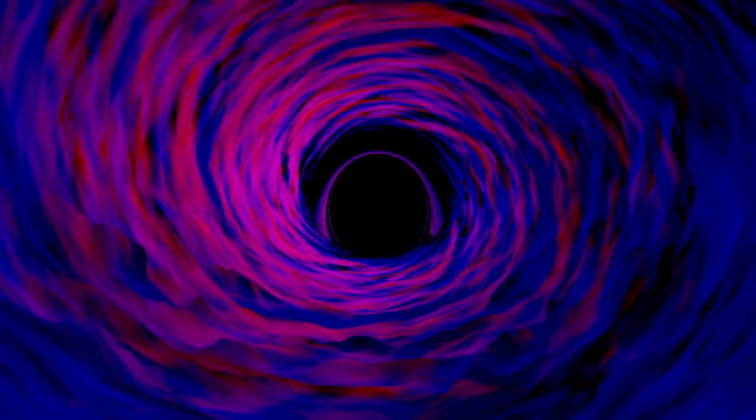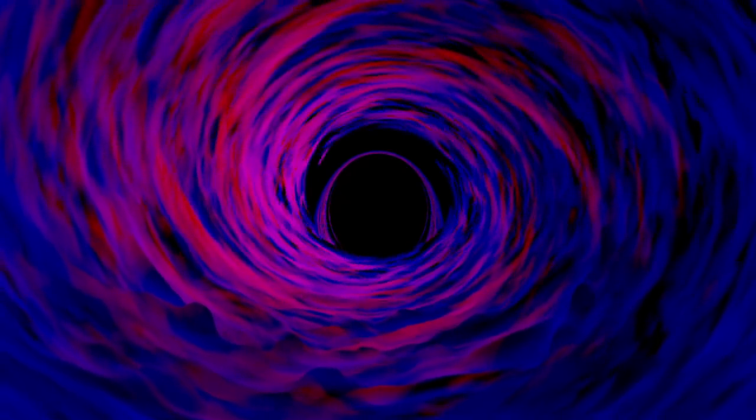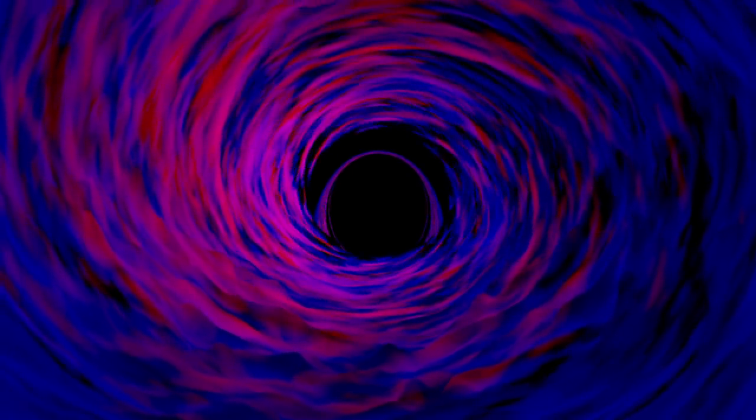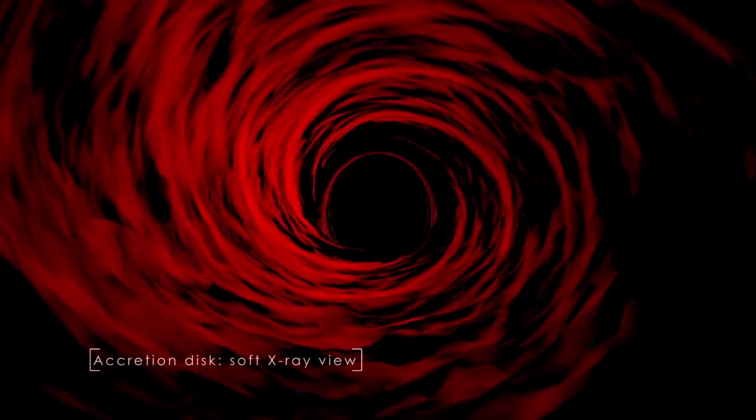SCP-094 has been classified as a miniature event horizon. Any matter that moves into SCP-094, including light, is irretrievably gone. However, SCP-094 is not a black hole since it does not exert a gravitational pull.